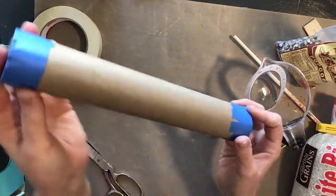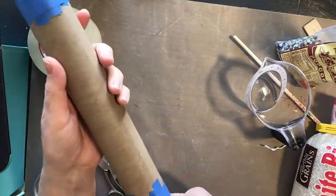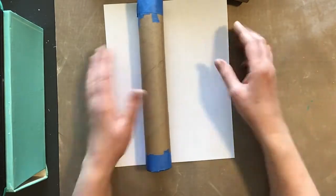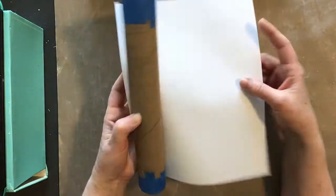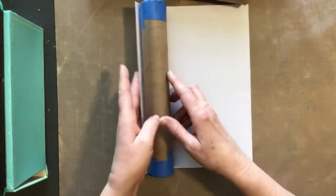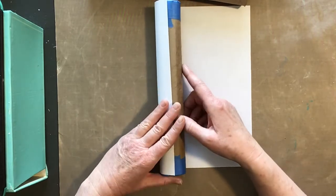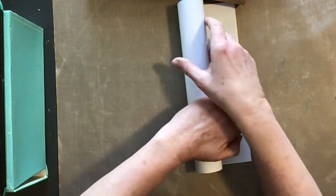We're not done yet. We're going to decorate it. When you're ready to decorate your rain stick, I have a piece of printer paper here. I'm going to measure how much I need to cover the roll. I'm just going to roll it up just like that.